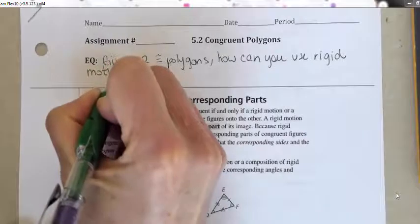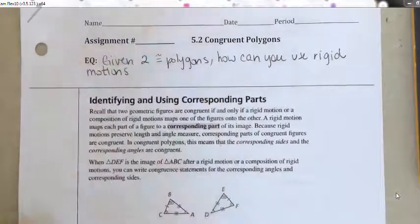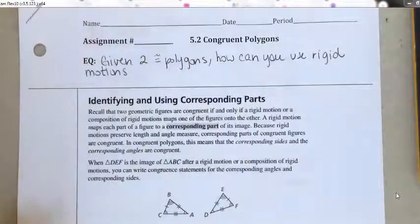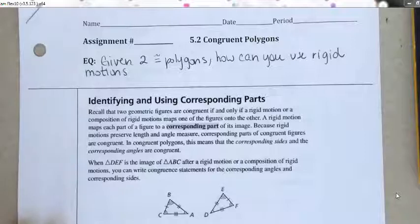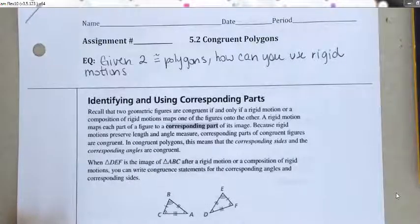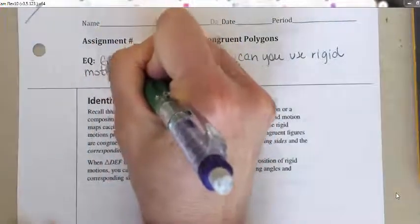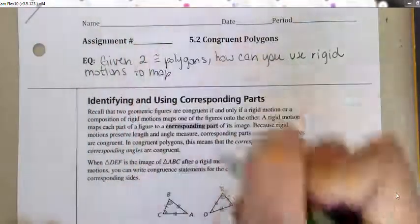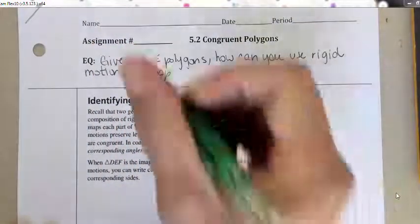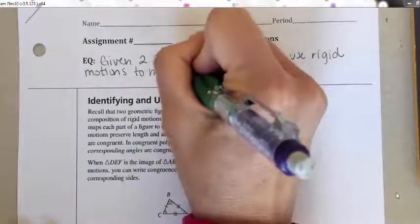Your rigid motions are your rigid transformations — the things that don't change the size or shape. So that's like a reflection, a translation, or a rotation — to map one polygon to the other.